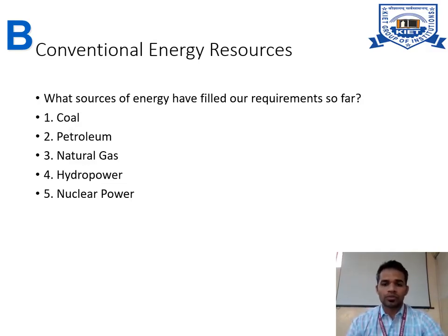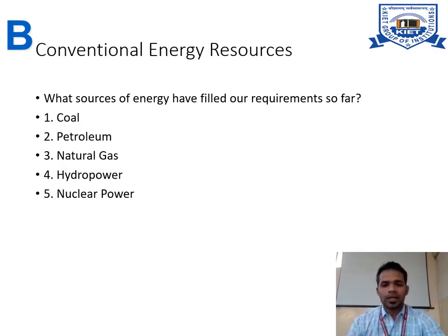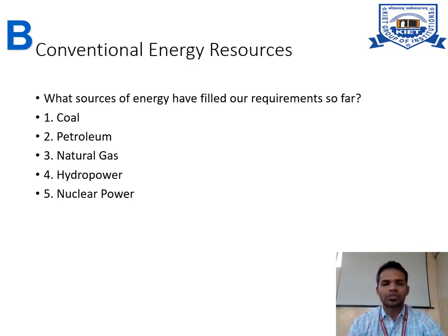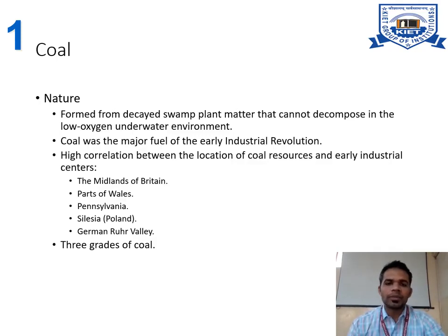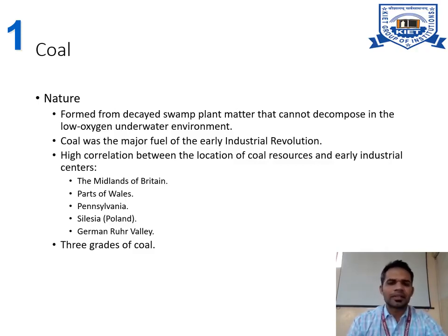Most students already know about these resources, so we will discuss what they are, why we use them, and what their limitations are. First, we are going to discuss Coal. Coal basically forms from decayed swamp plant matter that cannot decompose in a low-oxygen, underwater environment. Coal was the major fuel of the early industrial revolution, with a high correlation between coal resource locations and early industrial centers like parts of Wales, Pennsylvania, and Silesia.